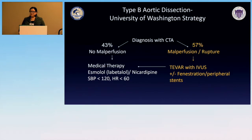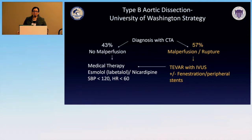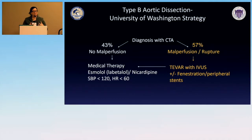For patients who are complicated — with malperfusion or rupture — these are sick people and you have to mobilize quickly. Our principle is to treat them preferentially with TEVAR, thoracic endovascular repair, and we use IVUS routinely. Sometimes we need to add fenestrations in the abdominal aorta if malperfusion doesn't correct with TEVAR, although in our experience that has been very rarely needed.